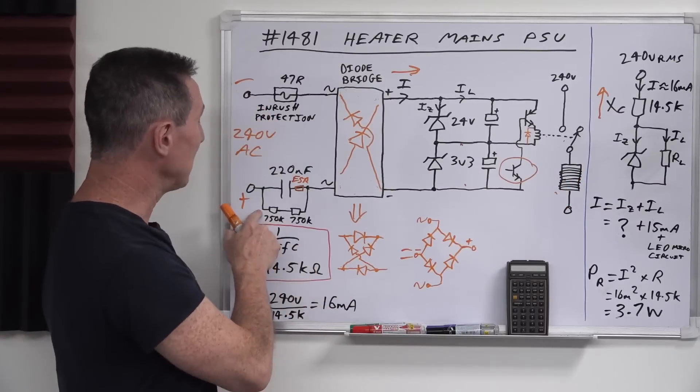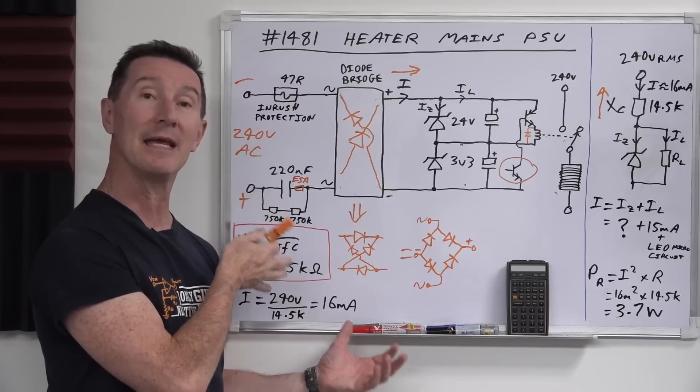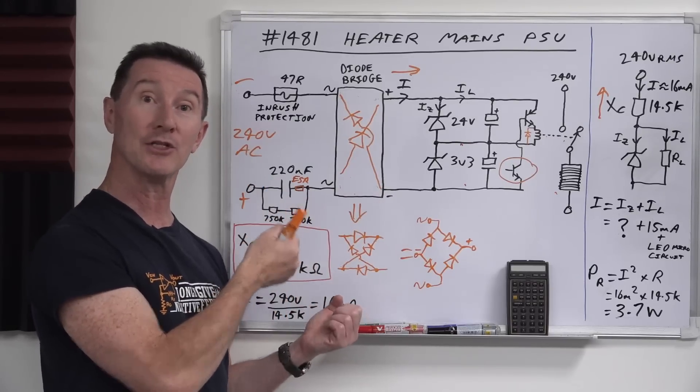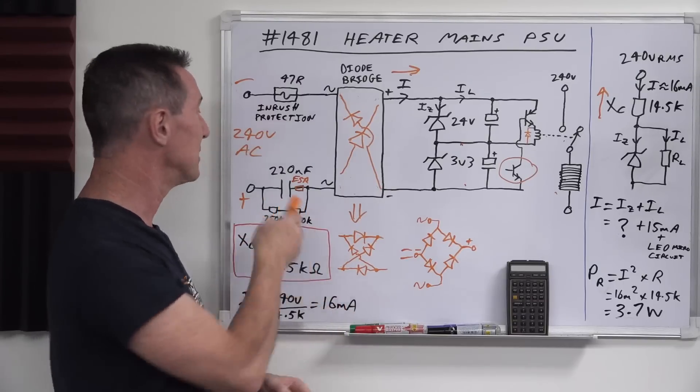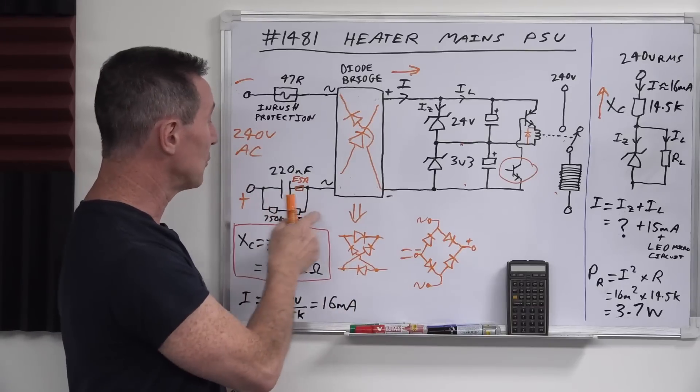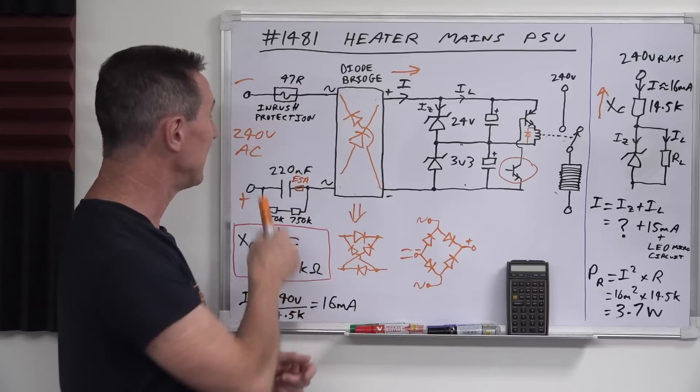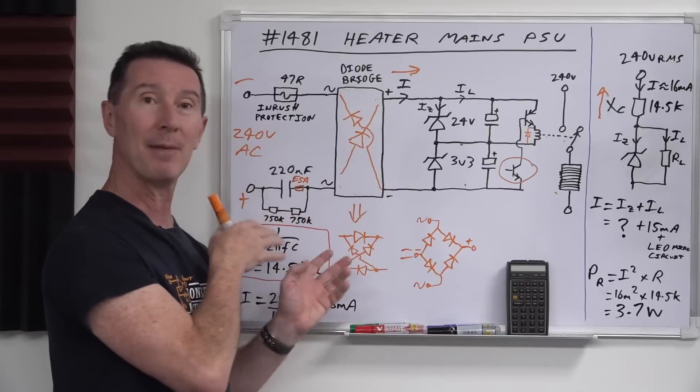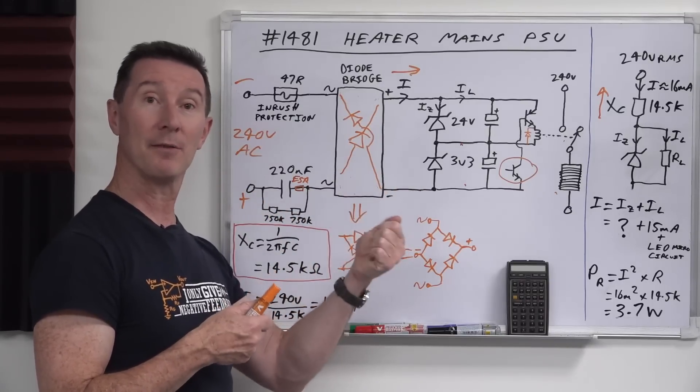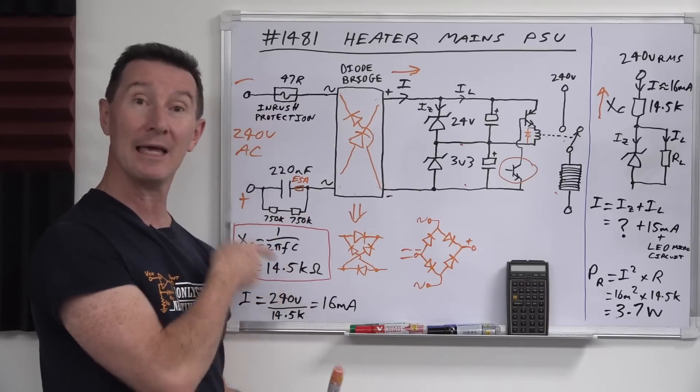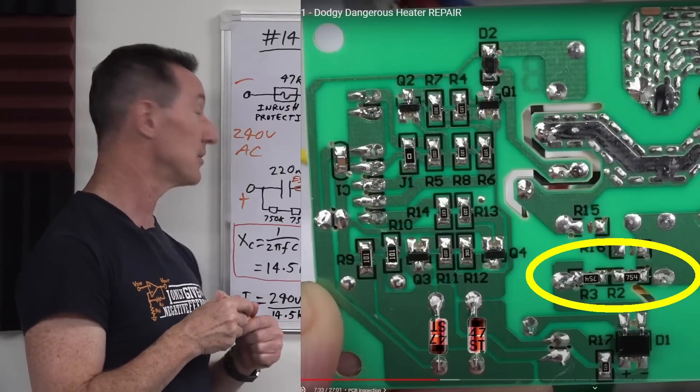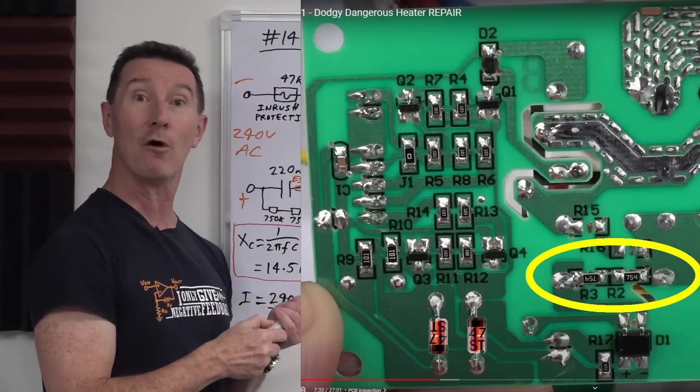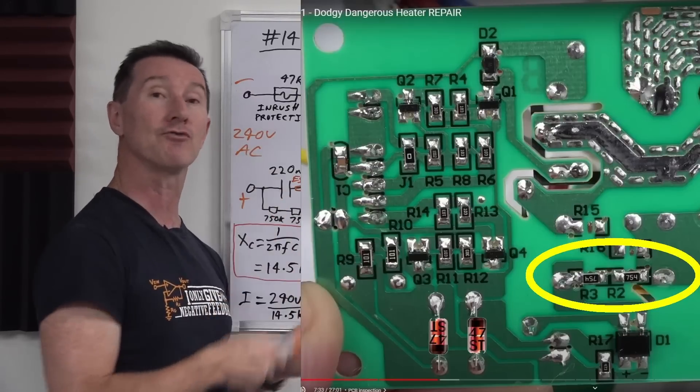And we almost forgot about the bleeder resistors across the 220 nanofarad capacitor here. This is for safety. So, when you pull the thing out, this capacitor could be charged up. You pull it out of the outlet, and you don't want to touch the pins, because then you could get a zappy. So, you've got two high-value resistors, 750k each, and so 1.5 meg total across the 220, and that just bleeds the charge off that capacitor. So, then the user, if they accidentally touch the mains pins, they're not going to get a zap from it. And the reason that they use two resistors in series physically here on the board, you can actually see the two there, is that the SMD resistors that they're using, they're only rated for about 200 volts each. So, they have to put two in series to get the voltage rating required.